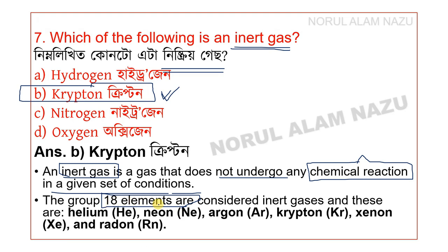Group 18 elements include: Helium, Neon, Argon, Krypton, Xenon, and Radon. These are all called inert gases or noble gases.